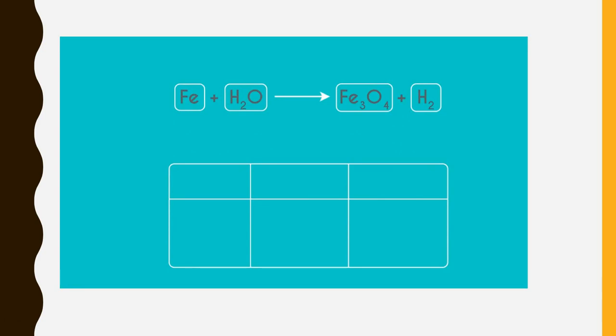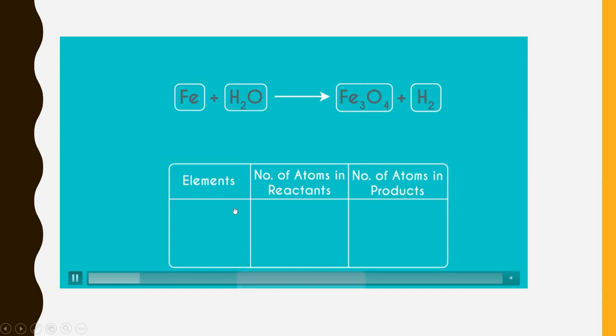Second step we will make a column of three where element in second column will place number of atoms in reactant and third column number of atoms in products. Now can you write the elements name in the first column? Yes. They are iron, hydrogen and oxygen. Now write the number of atoms towards both sides.